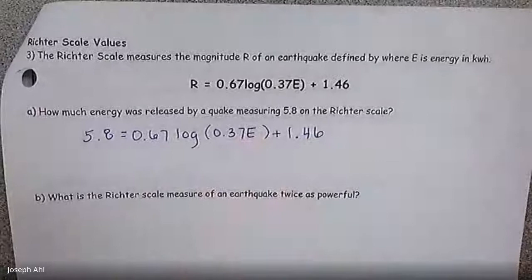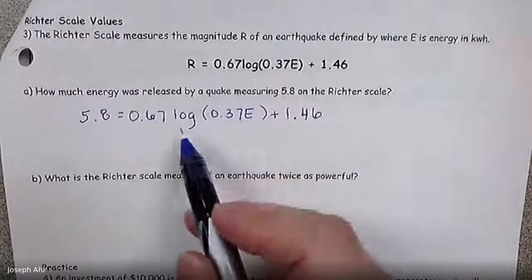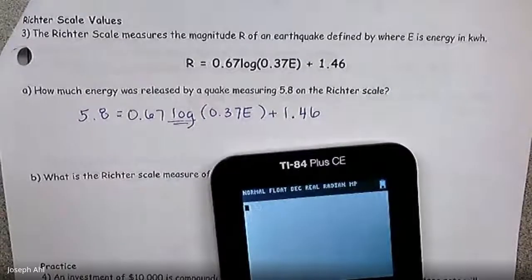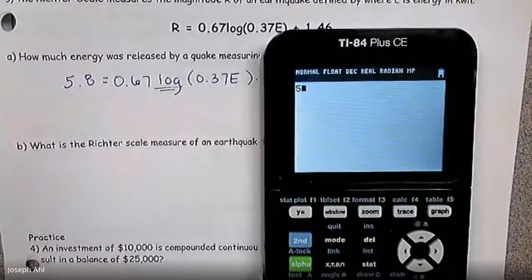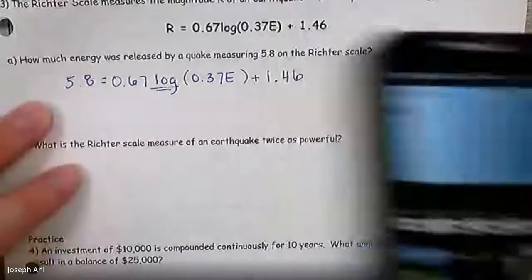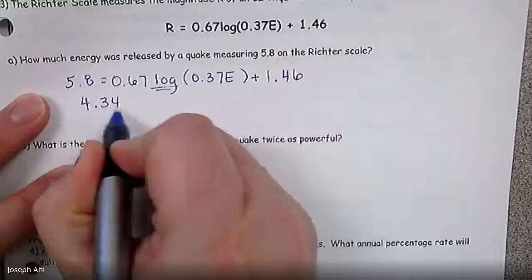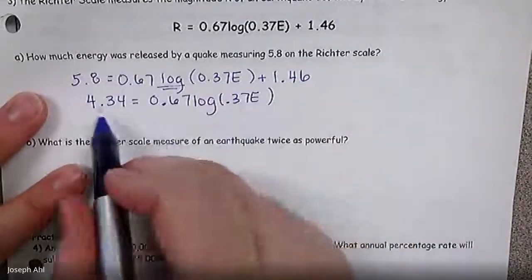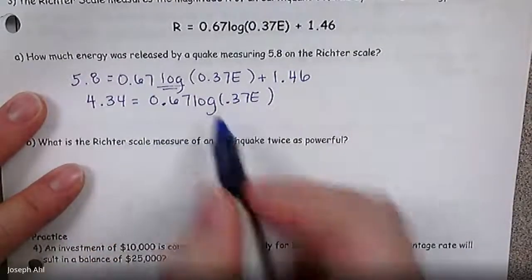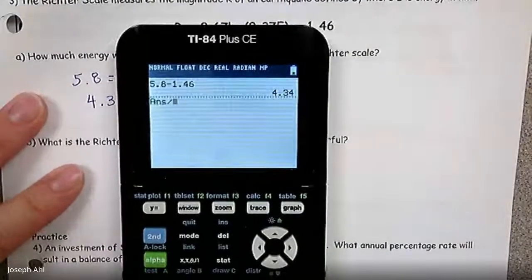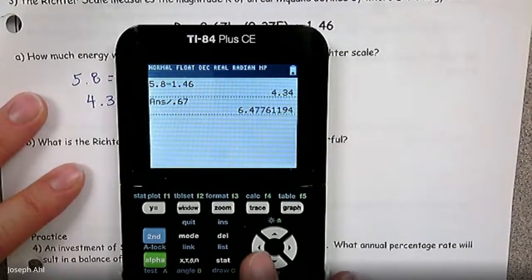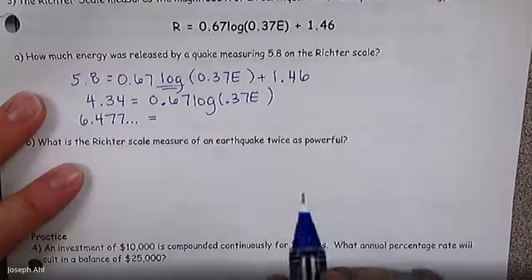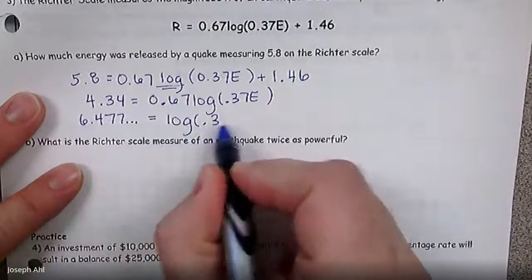So we have 5.8 is capital R. We want to find capital E, the energy there. So 5.8 equals 0.67 log of 0.37E plus 1.46. So we want to start solving this for capital E. In order to solve for capital E, we want to start isolating the log, get the log alone. So I'm going to subtract 1.46 to the other side. This is going to be a question that you're going to keep a lot of decimals on your calculator here. We're not going to round until the very end. 5.8 minus 1.46 is 4.34. Next thing, I'm going to divide both sides by 0.67. We get this not so nice looking number 6.477 dot dot dot.